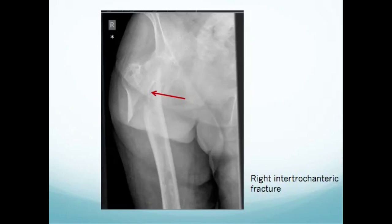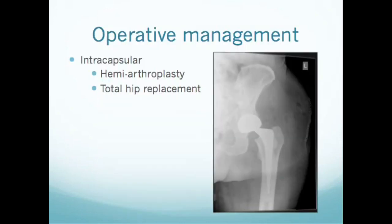For the vast majority of cases, intracapsular and extracapsular fractures follow different management pathways. An intracapsular fracture interrupts the blood supply to the femoral head, making the risk of avascular necrosis high. Therefore we tend to perform a joint replacement — a hemiarthroplasty — or in the slightly fitter population, a total hip replacement. The key principle is that the femoral head must be replaced to remove the risk of avascular necrosis.